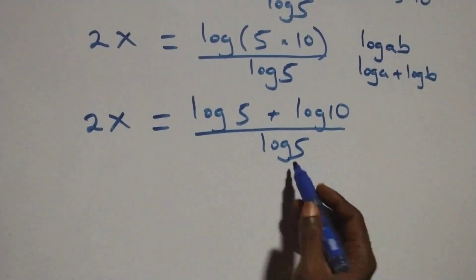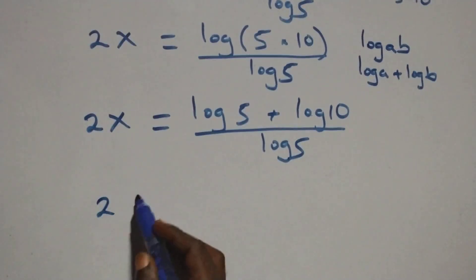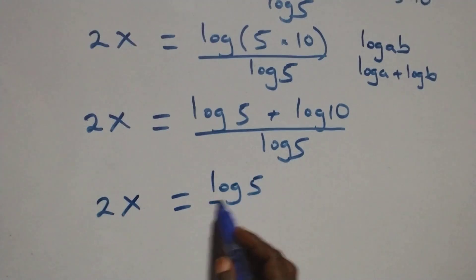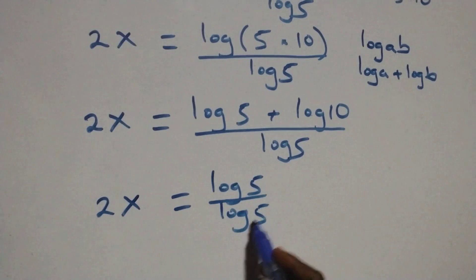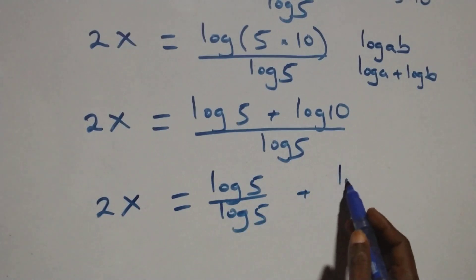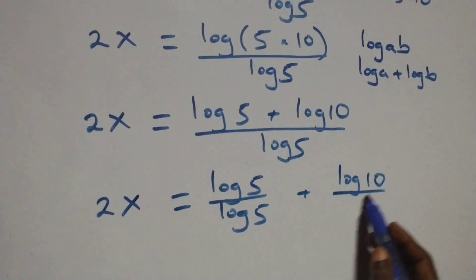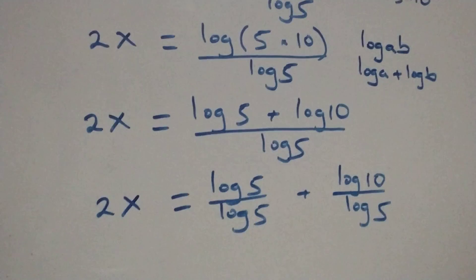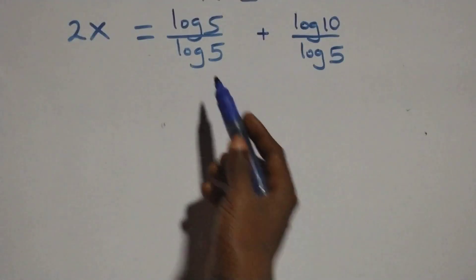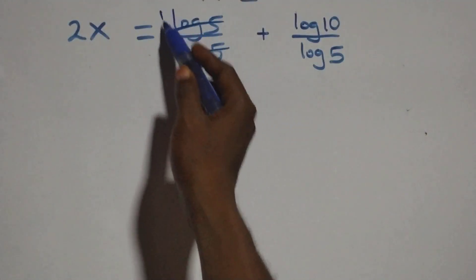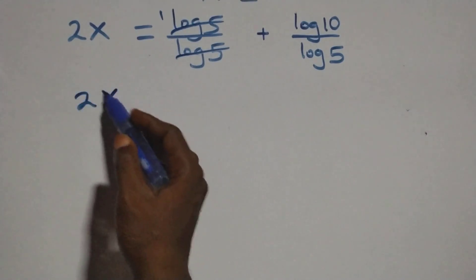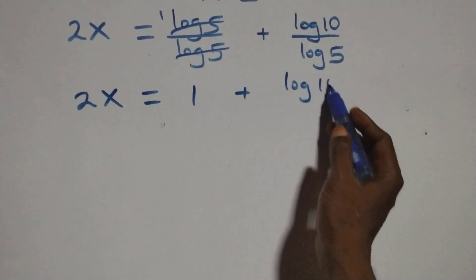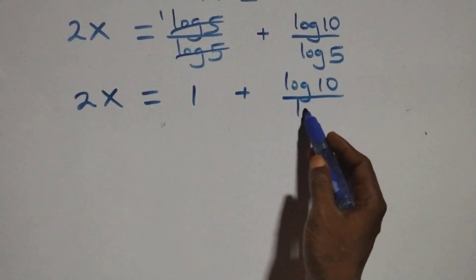We then separate this into two fractions: 2x equals to log 5 over log 5 plus log 10 over log 5. Here, log 5 cancels with log 5, leaving 1, so we have 2x equals to 1 plus log 10 over log 5.